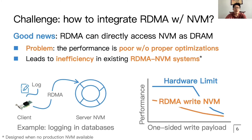Since NVM can be accessed like DRAM, RDMA can directly access NVM. So systems are able to achieve the best of both worlds by using them together to build remote persistent memory. For example, we can use them to implement logging in a distributed database.